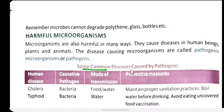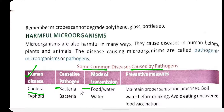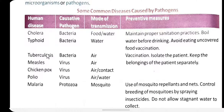Some common diseases caused by pathogens in humans: Cholera is caused by bacteria, and its mode of transmission is through contaminated food or water. The preventive measure is to maintain proper sanitation practices.